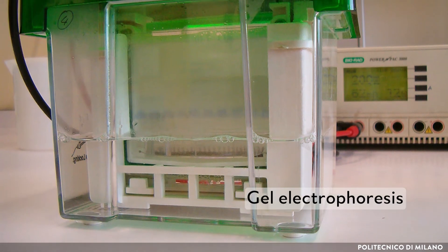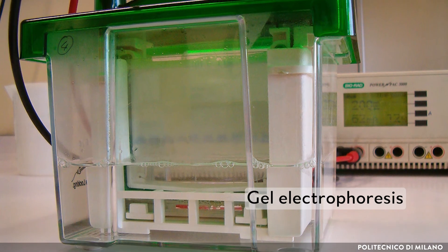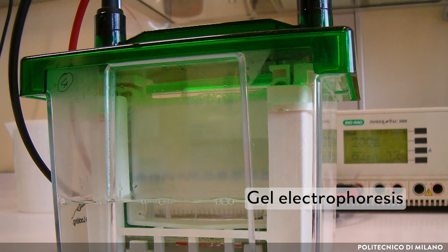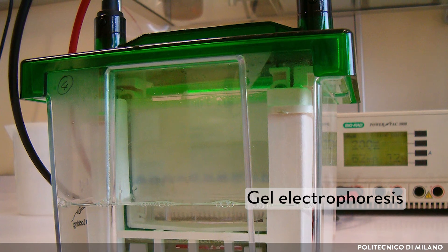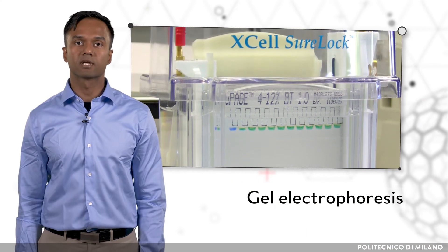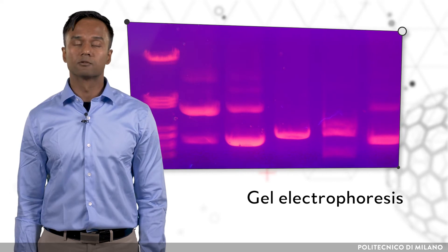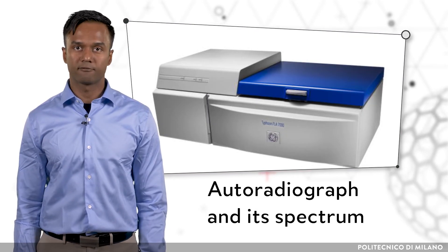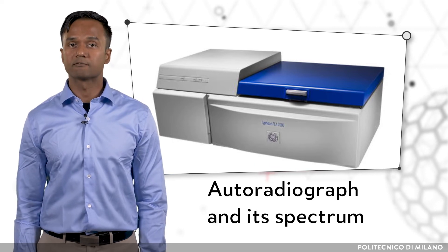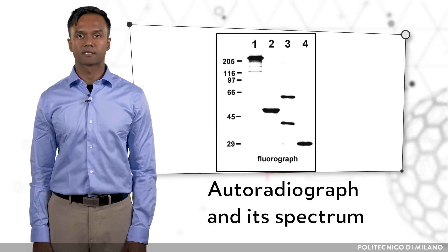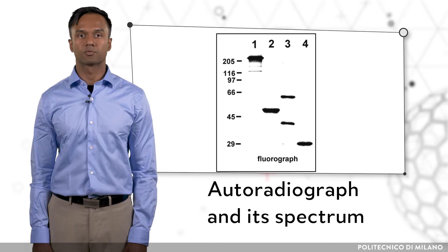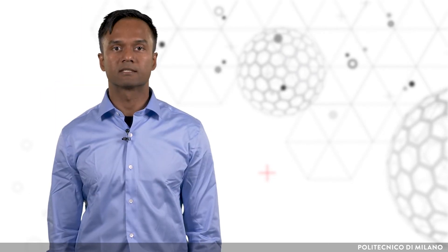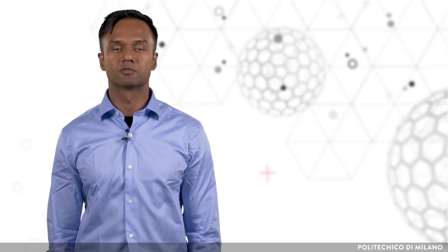Gel electrophoresis separates charged molecules according to their size using electrical potential difference. This technique is typically used for radiolabeled biomolecules like proteins and antibodies. The radiolabeled molecules are loaded into indentations at one end of the gel and an electric current is applied to pull the molecules through. After separation is complete, the gel is exposed to an X-ray film inside the autoradiograph, causing blackening of the film due to radioactivity. Molecules with lower weight move the furthest, and the approximate molecular weight of each radiolabeled component can be gauged using a reference.